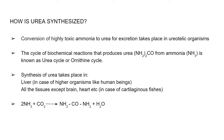In higher organisms like humans, the liver is the main site of urea production. In cartilaginous fishes, also called elasmobranchs — which include sharks and rays — urea production takes place everywhere in the body except organs like the brain and heart.